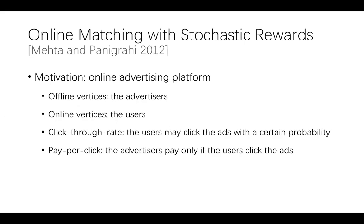We study a variant of online bipartite matching called online matching with stochastic rewards, which was first introduced by Mehta and Panigrahi in 2012. The model is motivated by online advertising platforms. The offline vertices represent advertisers and the online vertices represent users. The users may click the ads with a certain probability, and advertisers pay only if the users click the ads.